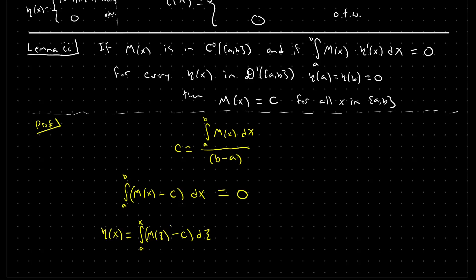If we now define η(x) to be the integral from a to x of (m(ξ) − c) dξ, using the fact that this is a continuous function, we can do this integral from a to x. The derivative of η(x) is just m(x) − c, by the fundamental theorem of calculus. So this function η automatically belongs to the set D¹, or the set of continuously differentiable functions, because m itself is a continuous function.